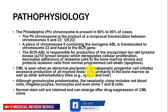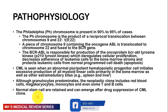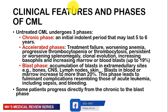If a patient doesn't receive treatment for CML, they undergo three phases. The chronic phase is indolent and gradual, lasting about five to six years. Without effective treatment, patients progress with worsening anemia, progressive thrombocytopenia or thrombocytosis, persistent splenomegaly, clonal evolution, and increased basophils, with marrow and blood blasts up to about 19%. Beyond this, blast cells can accumulate in extramedullary sites — bones, central nervous system, lymph nodes, and skin. When blasts in blood and bone marrow exceed 20%, this mirrors acute leukemia and leads to fulminant complications like sepsis and bleeding.